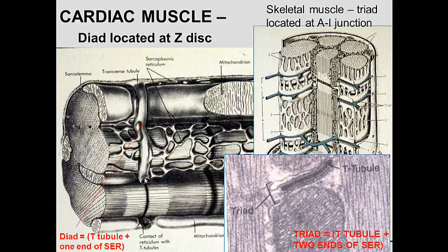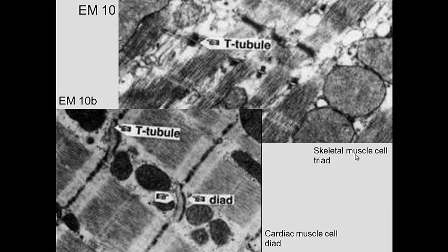Also note that in cardiac muscle, the transverse tubule is located on the Z-disc, whereas in skeletal muscle the transverse tubule is at the A-I junction. The transverse tubule is also smaller in skeletal muscle than in cardiac muscle. So skeletal muscle has a triad with three components at the A-I junction, while cardiac muscle has a diad with the transverse tubule on the Z-disc.